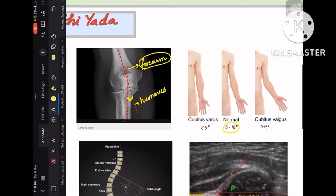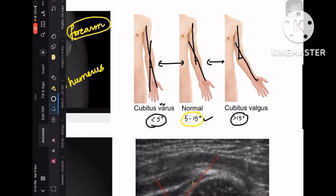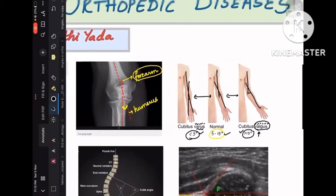The intersection angle of the humeral axis and the forearm axis is called the carrying angle — normally 5 to 15 degrees. In cubitus valgus the angle is increased; in cubitus varus it is decreased. To remember: varus has 5 letters (decreased, like less than 5 degrees), and valgus has 6 letters (increased). The middle image is normal (5–15°), cubitus varus is decreased, and cubitus valgus is increased.